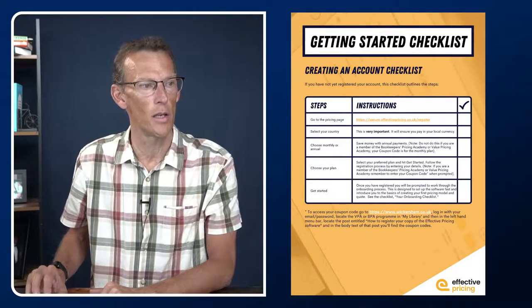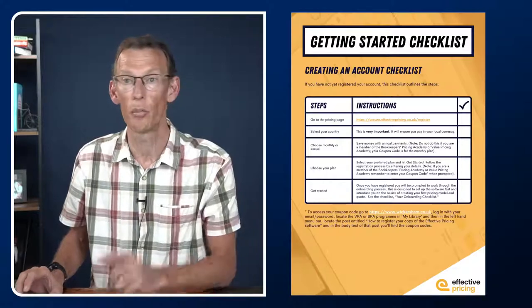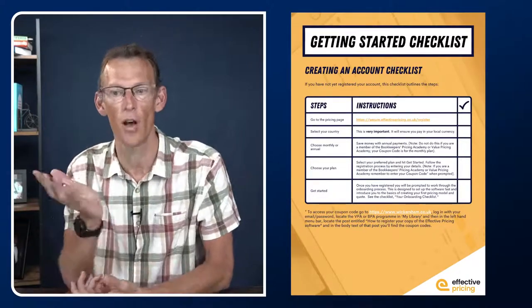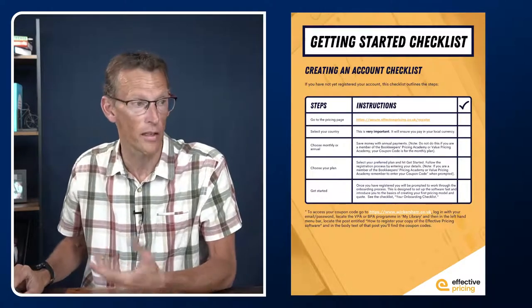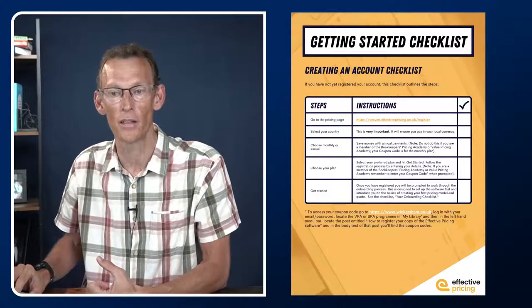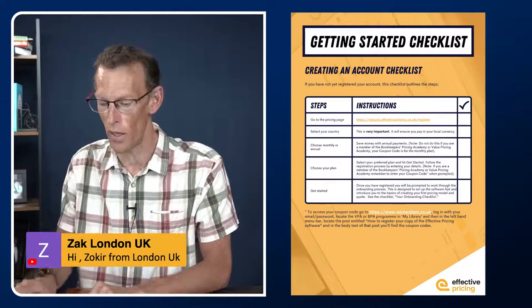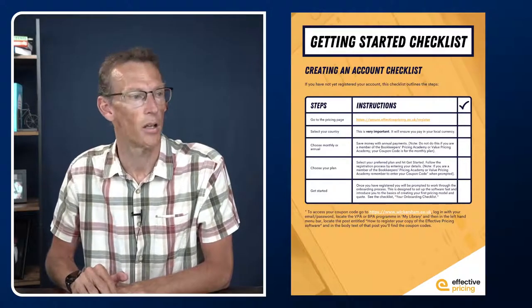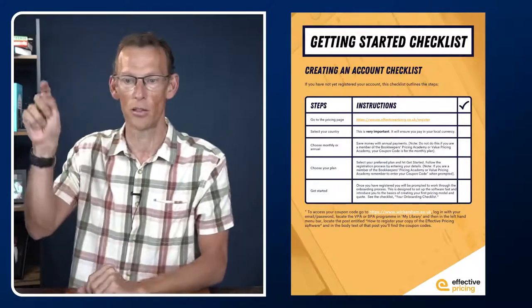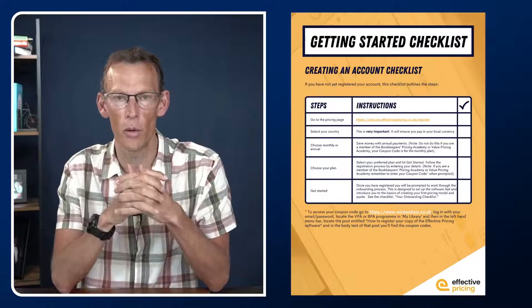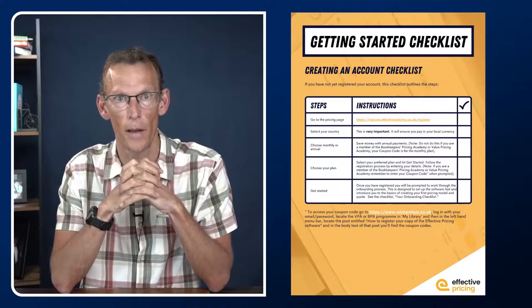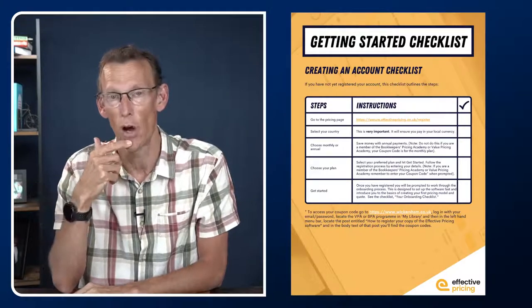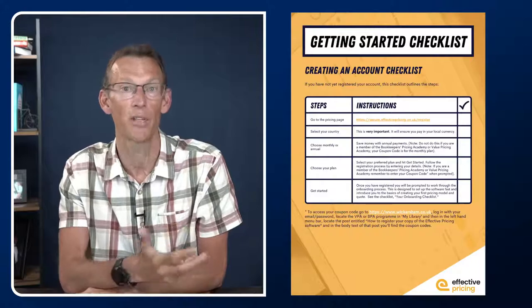This resource was a request from one of the members of the Value Pricing Academy — they asked for checklists to help with getting the software set up. It's a series of checklists. The link is being shared in Zoom and on the social channels now. The first checklist is really the onboarding process — a series of simple tasks to get you up and running fast, with links to video training and other resources. At the very end you'll see how to get support.